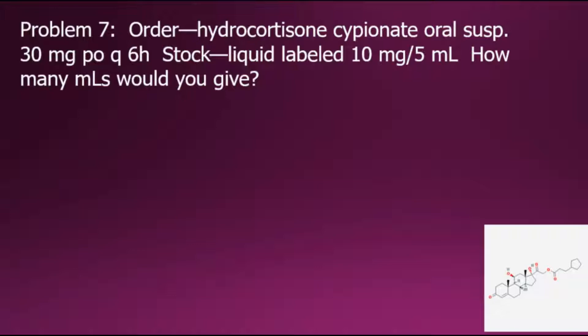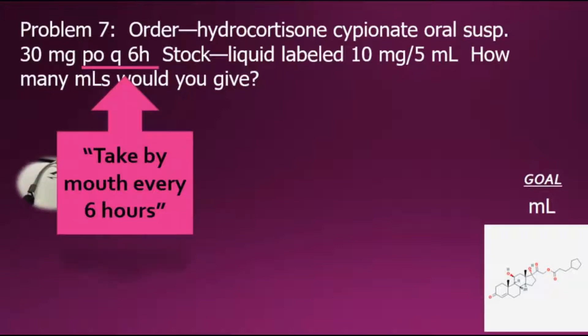To answer this problem, we will set the goal of our order converted in milliliters. To begin dimensional analysis, we always start this type of problem with the doctor's order, which is the 30 milligrams, but has additional information where PO stands for take by mouth, Q 6 hours translates into every 6 hours.